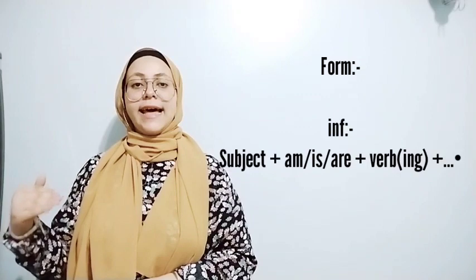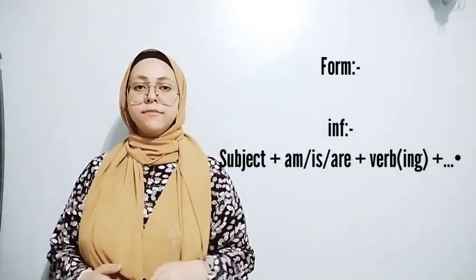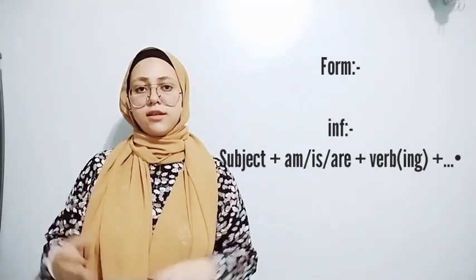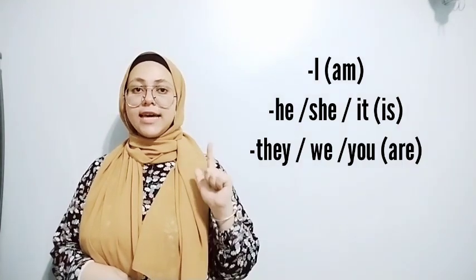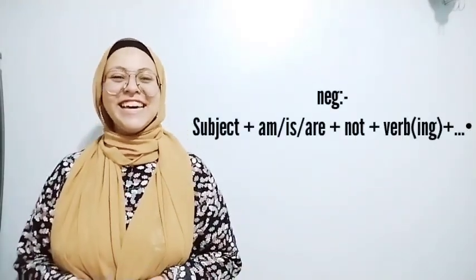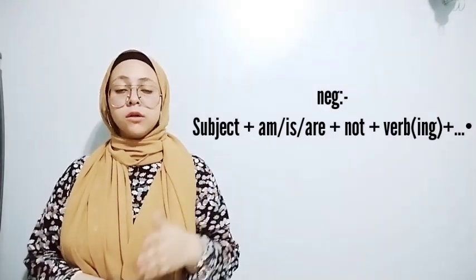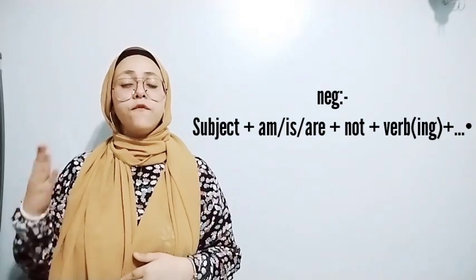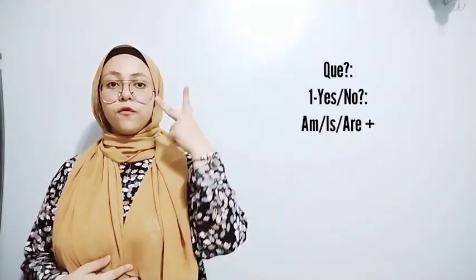The affirmative form is: subject plus am, is, or are, plus the verb with -ing, plus the rest of the sentence. I → am; he, she, it → is; they, we, you → are. The negative sentence is: subject plus am, is, or are, plus not, plus verb with -ing, plus the rest of the sentence.